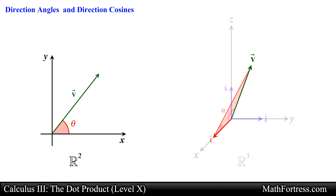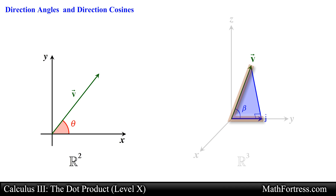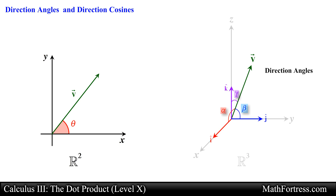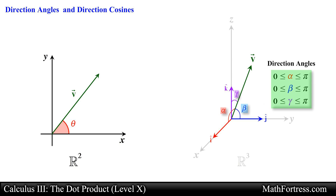The angle alpha is the angle between vector v and the unit vector i hat. The angle beta is the angle between vector v and the unit vector j hat. And the angle gamma is the angle that vector v makes with the unit vector k hat. These three angles are referred to as the direction angles of vector v.